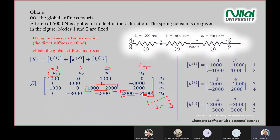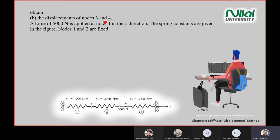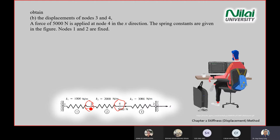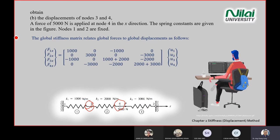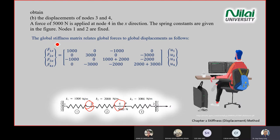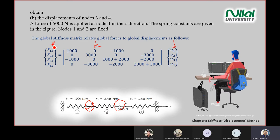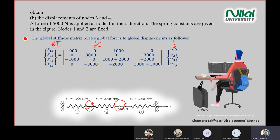We've solved part (a). Now for part (b) — finding displacements at points three and four. Recall f equals Kd. Write capital F equals capital K times d. Use curly brackets for force, square brackets for K, curly brackets for displacement. With the sequence one, two, three, four, write f1x, f2x, f3x, f4x on the force side and u1, u2, u3, u4 for displacement.